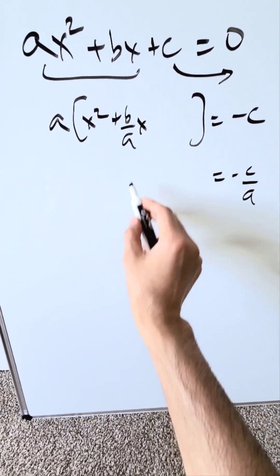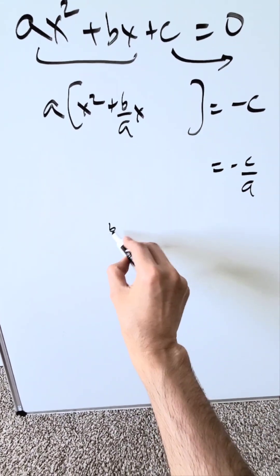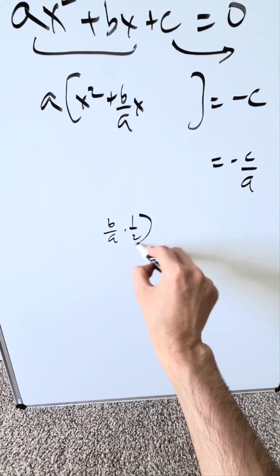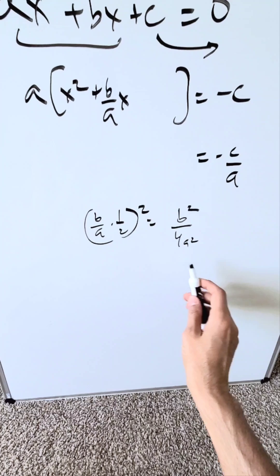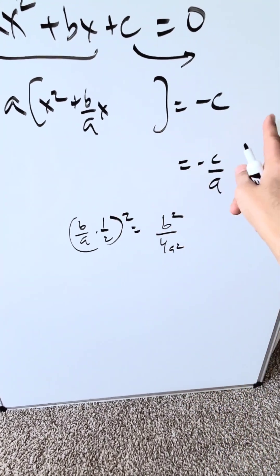Bring in your term. How do you know what that term is? Focus right here at b over a. You'll do b over a times 1 over 2, and you'll square it. This is your part of completing the square technique. b squared over 4a squared is what you get.